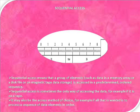Sequential access means that a group of elements, such as data in a memory array, a disk file, or a magnetic tape data storage, is accessed in a predetermined ordered sequence. Sequential access is sometimes the only way of accessing the data — for example, if it is on a tape. It may also be the access method of choice if all that is wanted is to process a sequence of data elements in order.